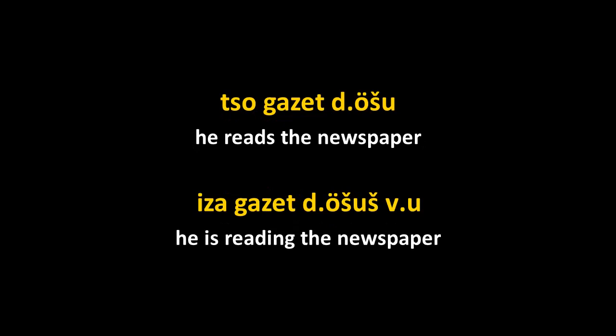Let's contrast tso gazet durju with the present continuous form. If you add a -sh sound to the present tense — instead of dershu, you get dershush — that's the progressive form, like the -ING in English. So dershush means 'reading.'